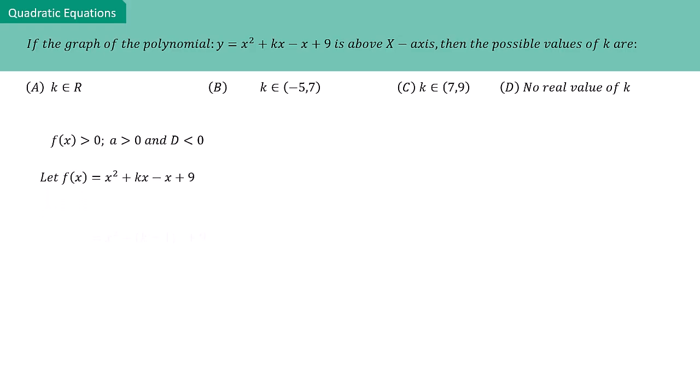The standard form of the given polynomial is x² + (k - 1)x + 9. Using the discriminant, we can set up an inequality.